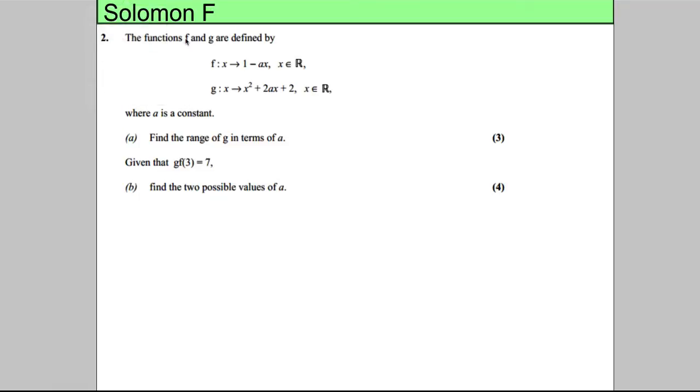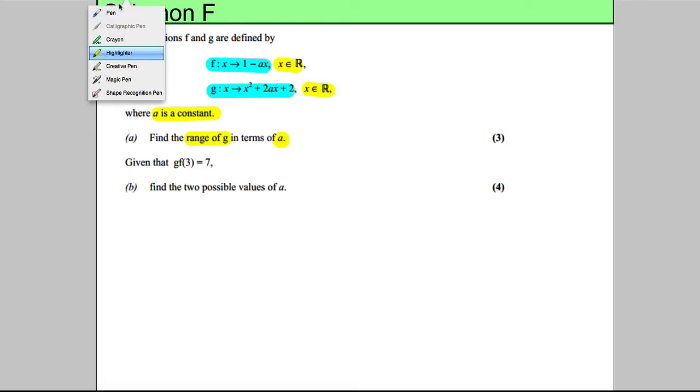In this question we've got two functions F and G. F looks like a linear function with an unknown number a in it, and G is a quadratic, again with the same a in it. We're told that x can be any real number and that a is constant. It says find the range of G, that's all the y numbers G can take, in terms of a.